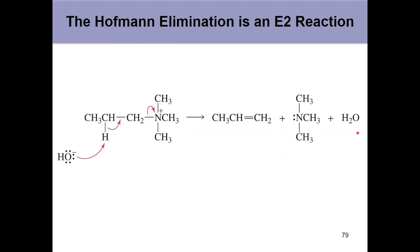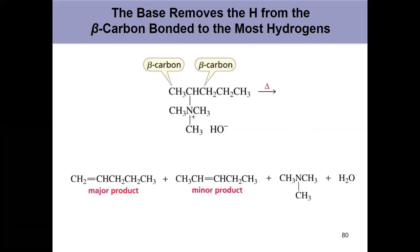But the question becomes, in this situation I only have one beta carbon. I couldn't pull off any of these hydrogens because those are alpha hydrogens. That wouldn't work. I have to pull off a beta hydrogen. What if you have multiple beta carbons? This reaction, the Hoffmann elimination, pulls from the beta carbon that's bonded to the most hydrogens, which is actually anti-Zaitsev.